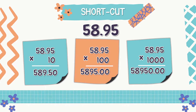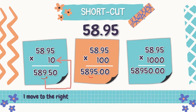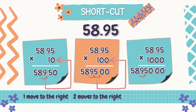But it's quite long, right? So let's have a shortcut. Look at the products: in multiplying by 10, we move the decimal point one place to the right; in multiplying by 100, we move the decimal point two places to the right; in multiplying by 1,000, we move the decimal point three places to the right.